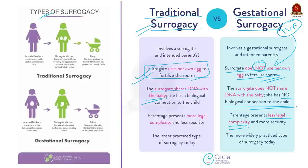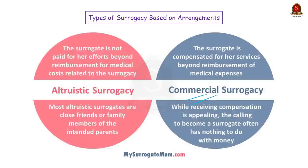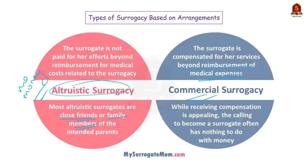The surrogacy arrangement may be commercial or altruistic, depending on whether the surrogate receives financial reward for her pregnancy. Commercial surrogacy means commercialization of surrogacy services — any arrangement in which the surrogate mother is compensated beyond reimbursement of medical expenses. In altruistic surrogacy, a woman volunteers to carry a pregnancy for intended parents without any monetary compensation. Most altruistic surrogacies are between family members or close friends, such as when a woman carries a pregnancy for a sibling without compensation.